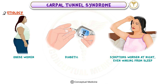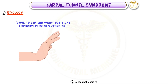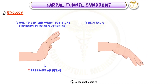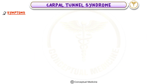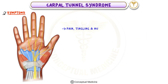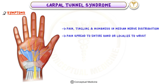This happens because certain wrist positions, like extreme flexion or extension, increase pressure on the nerve, while a neutral or slightly flexed wrist position lowers the strain and provides relief. The classic symptoms include pain, tingling, and numbness in the median nerve distribution. In some cases, the pain can spread to the entire hand or localize to the wrist.